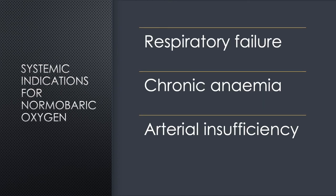Systemic indications and comorbid conditions that could benefit from normobaric oxygen therapy include respiratory failure with low saturation and low partial arterial oxygen pressures. Patients with chronic anemia might benefit from temporary oxygen therapy while the cause is corrected. In patients with arterial insufficiency awaiting surgery, temporary normobaric oxygen therapy might ameliorate tissue ischemia until arterial reconstruction has been done. A prescription needs to include the saturation goal and treatment duration. Care should be taken not to initiate normobaric oxygen therapy for a patient with a non-healable ulcer, as it will only increase the cost of treatment.